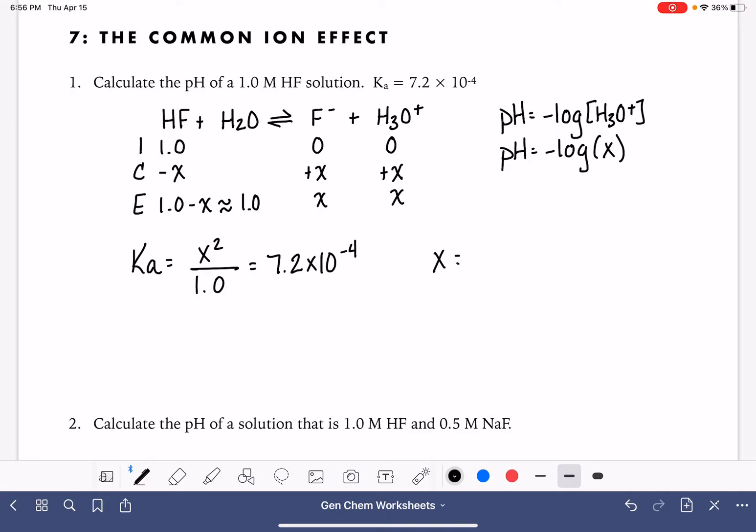So do the math on this. 7.2 times 10 to the minus 4 times 1, and then take the square root. We get 2.68 times 10 to the negative 2.